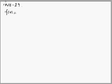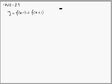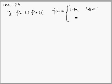This is functions module INA question number 29. We are supposed to draw the graph of y = f(x-1) + f(x+1), where f(x) is a piecewise defined function: f(x) = 1 - |x| when |x| < 1, and 0 when |x| > 1.